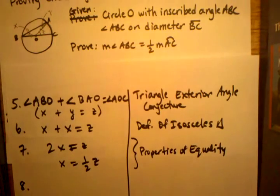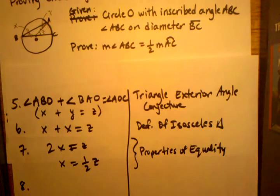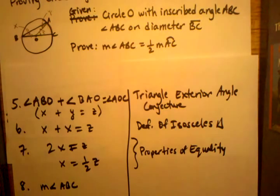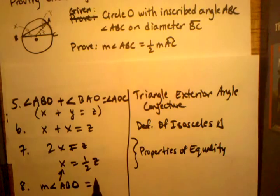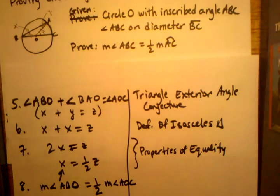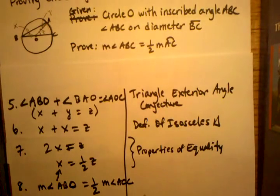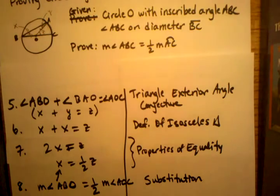I can substitute back in for X and Z what those are equivalent to, which gets me closer to what I need to prove. So the measurement of angle ABO equals one-half the measurement of angle AOC. The reason I can write it that way is substitution — when I've determined that something equals something else, I can always substitute them back and forth.